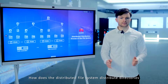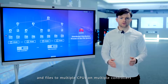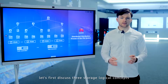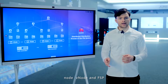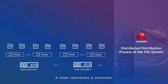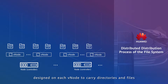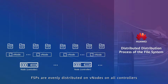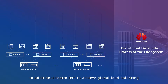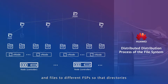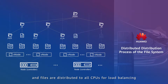How does the distributed storage system distribute directories and files to multiple CPUs on multiple controllers? Let's first discuss three storage logical concepts: Nodes, Vnode, and FSP. A node represents a controller, and a Vnode represents a CPU on a controller. On high-end models, each controller has four CPUs known as Vnodes. On mid-range models, each controller has two Vnodes. File service partitions (FSPs) are logical partitions designed on each Vnode to carry directories and files. FSPs are evenly distributed on Vnodes on all controllers. When more controllers are added, FSPs are automatically expanded to additional controllers to achieve global load balancing. In conclusion, the OceanStore Dorado file system distributes directories and files to different FSPs so that directories and files are distributed to all CPUs for load balancing.